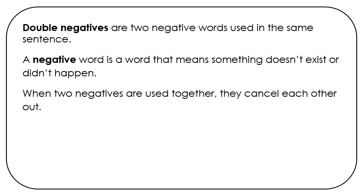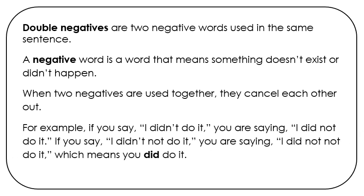When two negatives are used together, they cancel each other out. For example, if you say I didn't do it, you're saying I did not do it. If you say I didn't not do it, you are saying I did not not do it, which means you did do it.